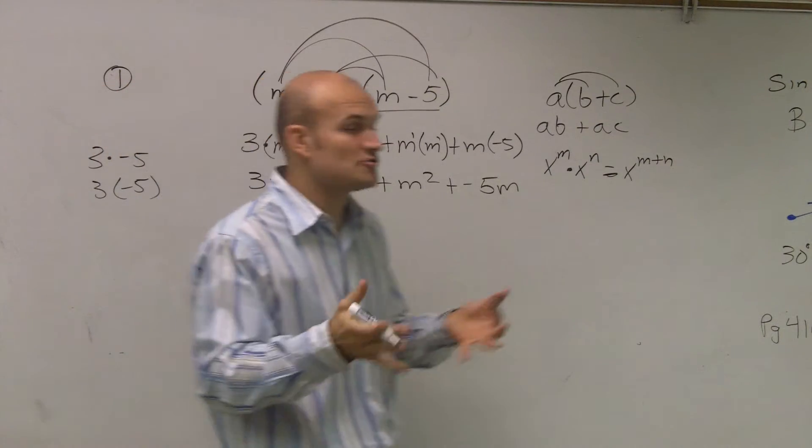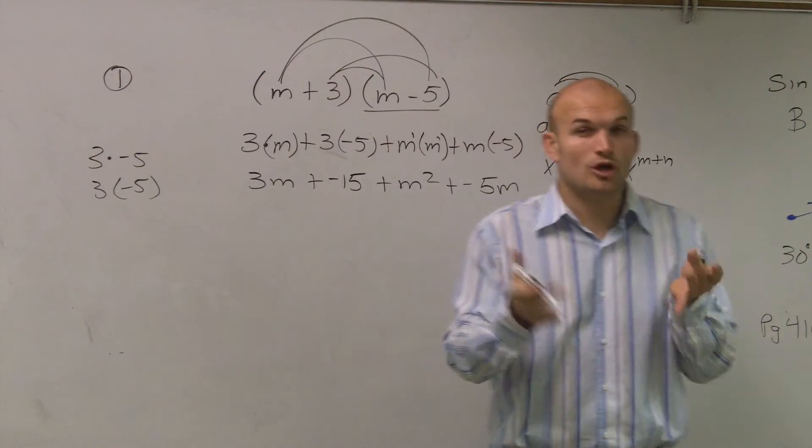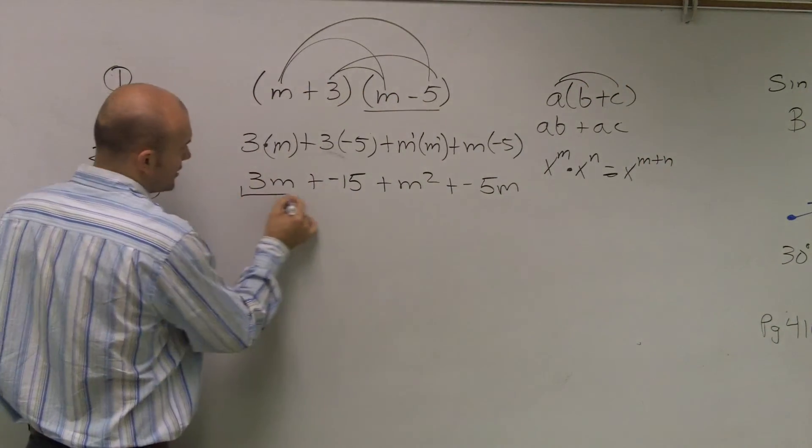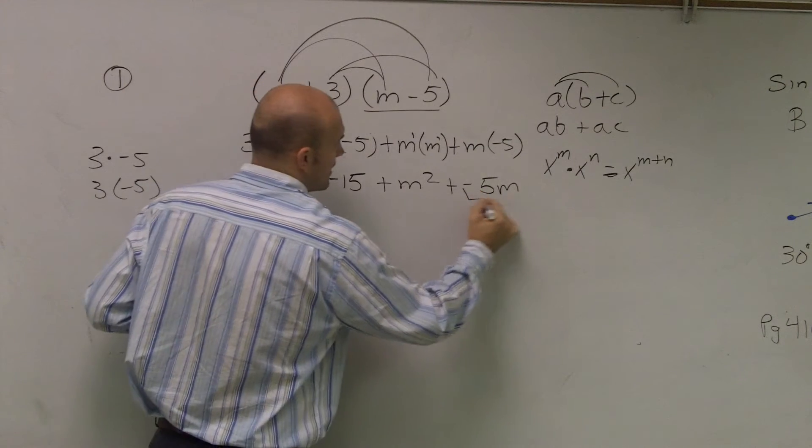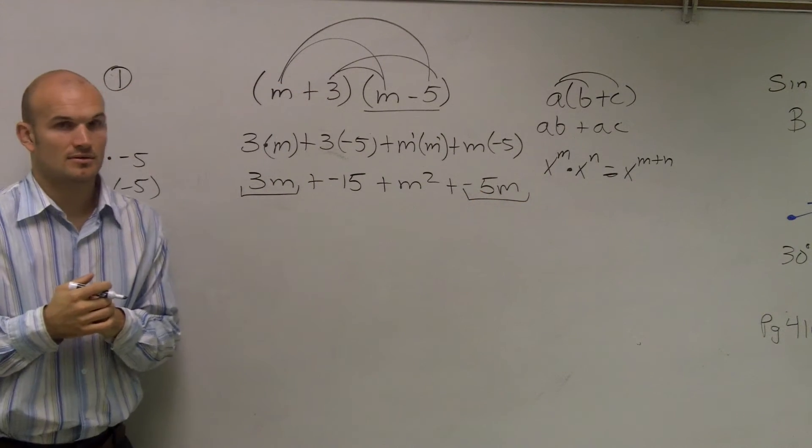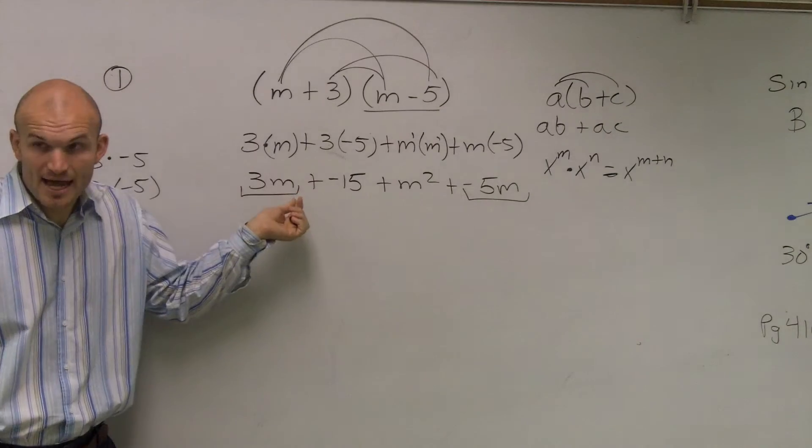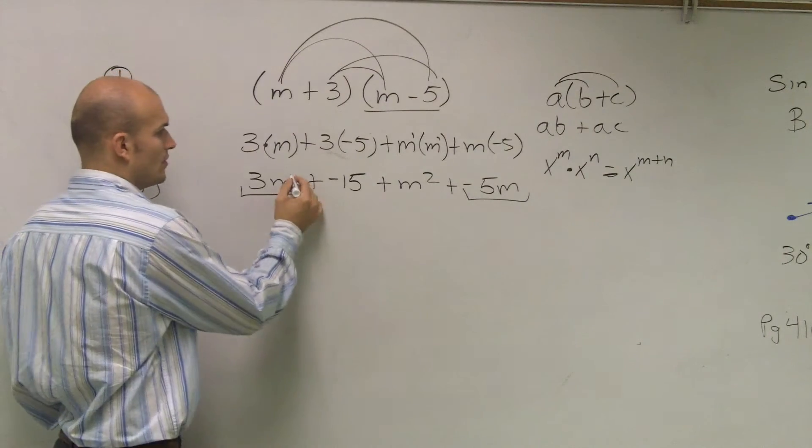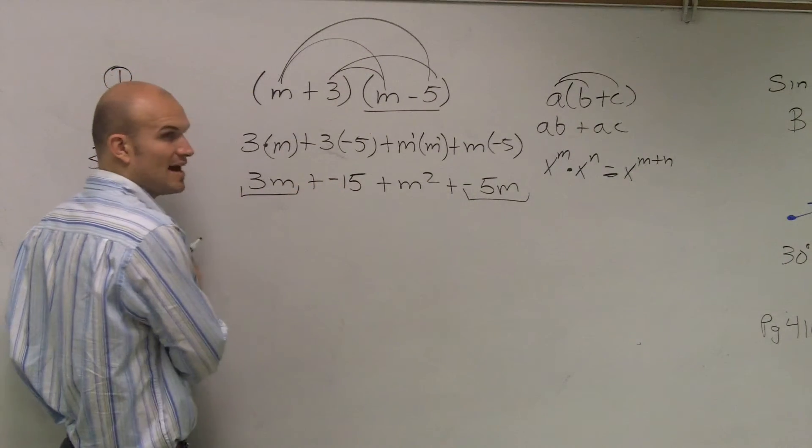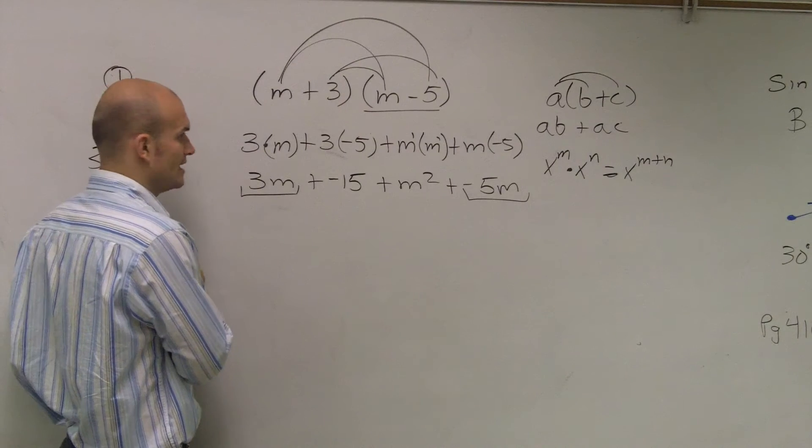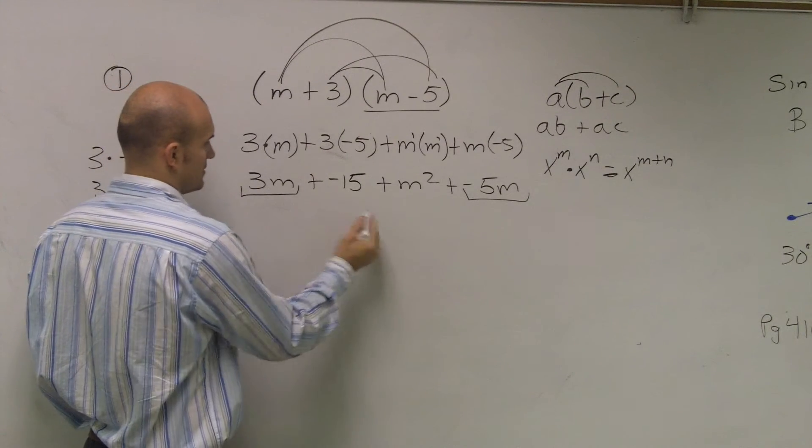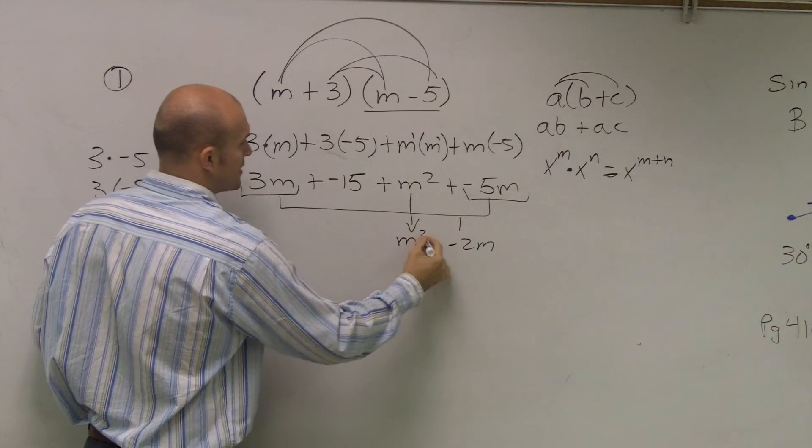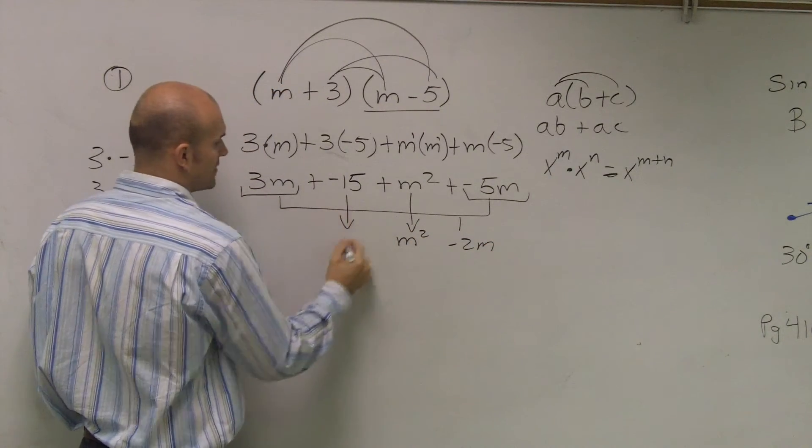So then, the last thing we need to look at is, remember, we combine like terms? You can only add and subtract when they have exactly the same base and exponent. So I look at and I notice that three M and negative five M have exactly the same base, M, and they have the same exponent, which is one. So I can combine them. Three M plus negative five M is going to be negative two M.